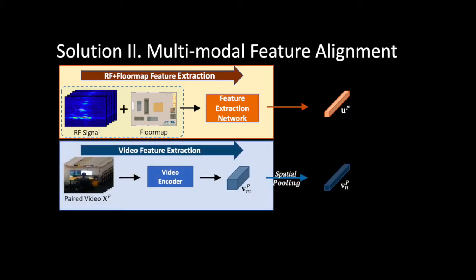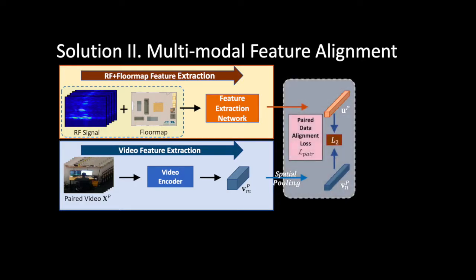Then, we extract the features from the corresponding video using a video encoder. Since this video and RF correspond to the exact same event, we can use L2 loss to align the features from paired video and RF to be consistent with each other. Therefore, transfer the knowledge from RGB to RF in this small dataset.